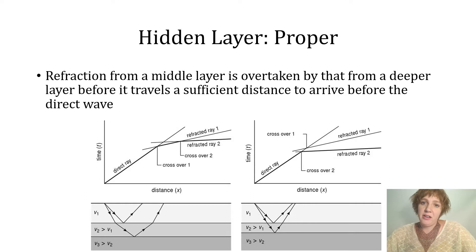The first type of hidden layer your book refers to as hidden layer proper. In this case, refraction from the middle layer is overtaken by refraction from a deeper layer before it travels long enough along the boundary to arrive before the direct wave.